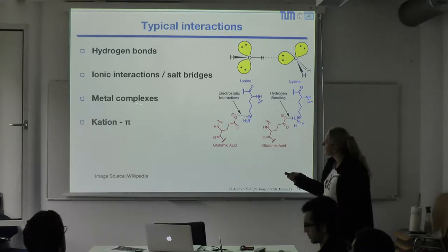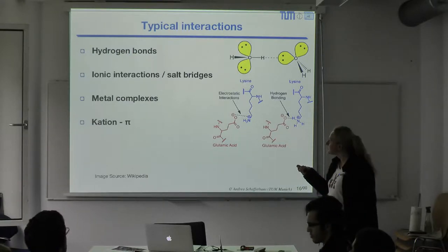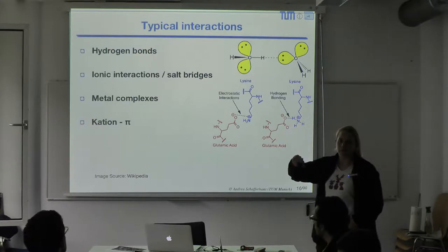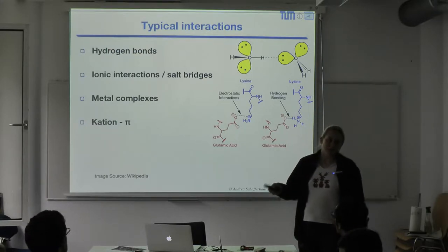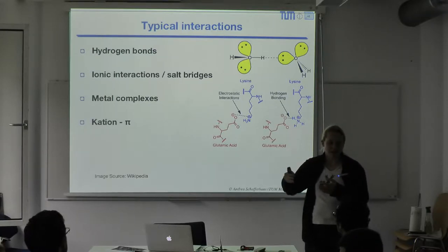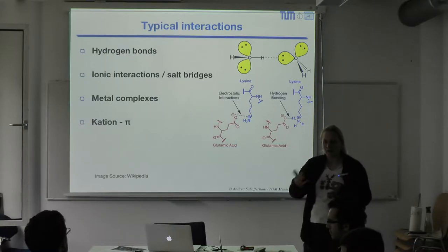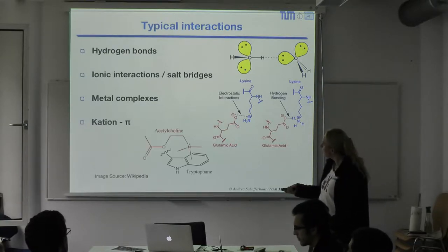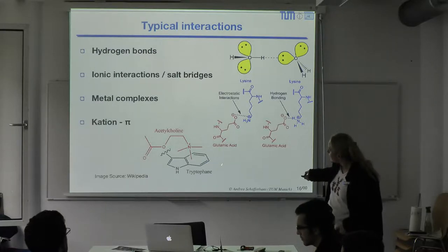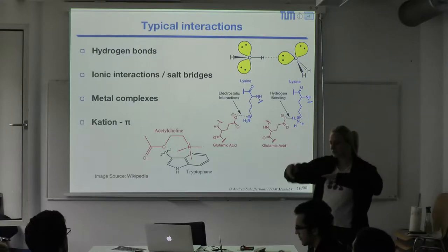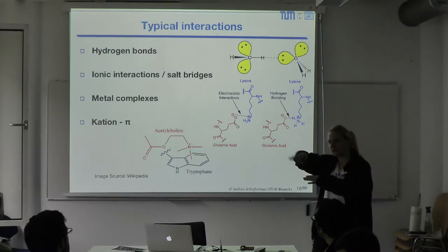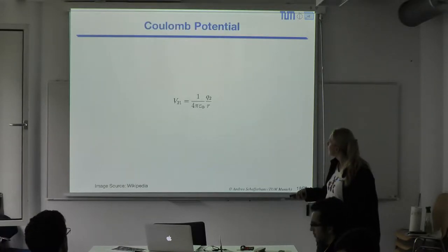Other types of interactions include metal coordination — metals often appear in cofactors and are commonly involved in redox reactions (reduction or oxidation) because they help lower the activation energy. There are also cation-pi interactions, where a cation interacts with delocalized electrons in a pi system.